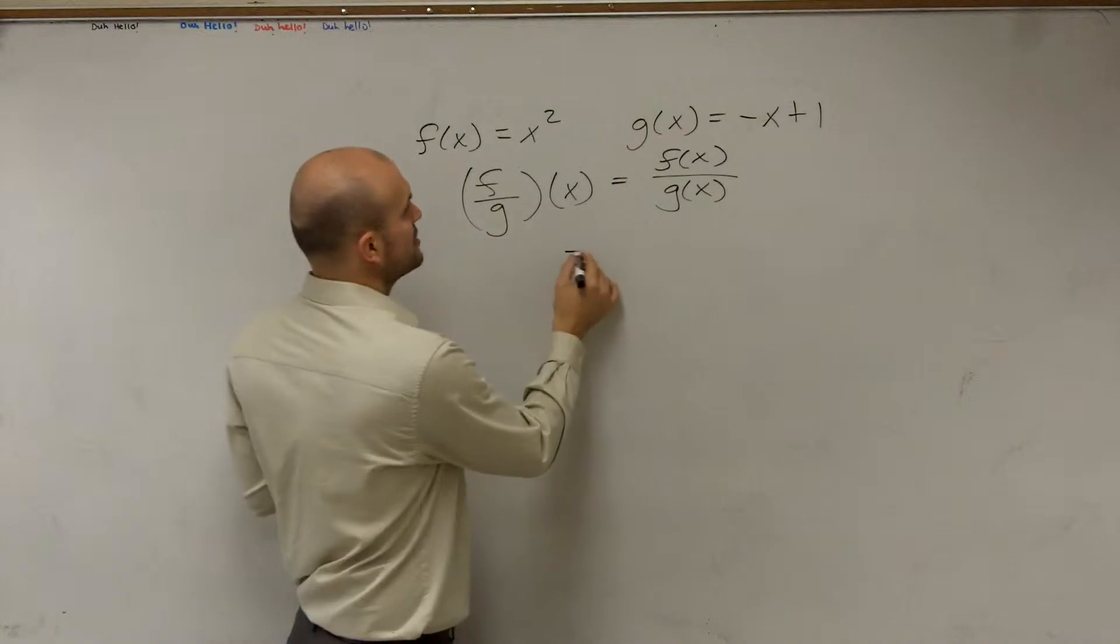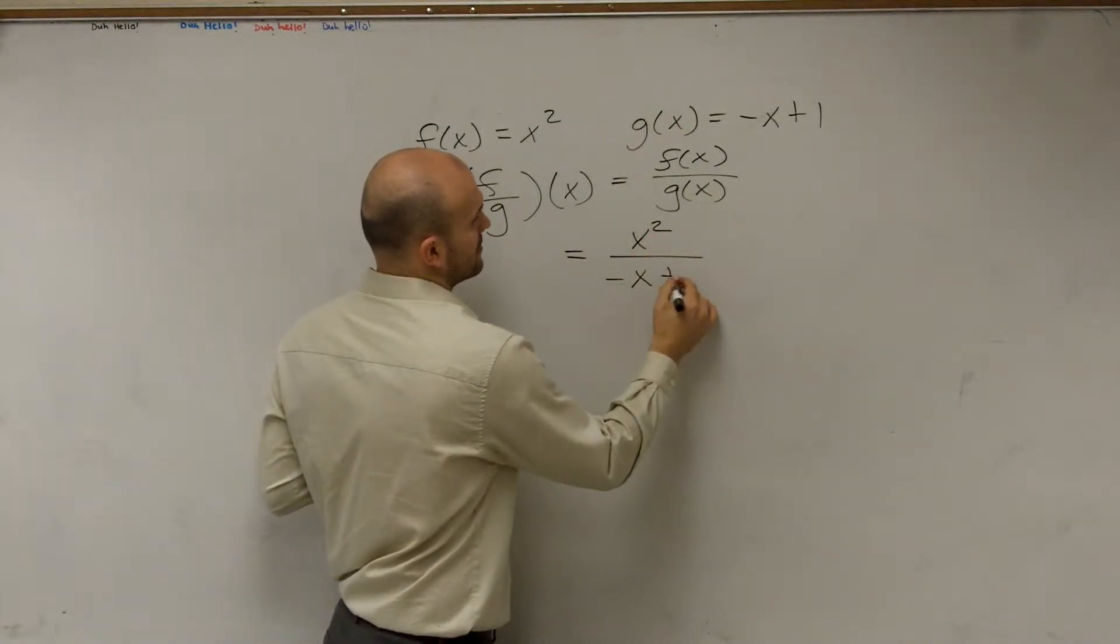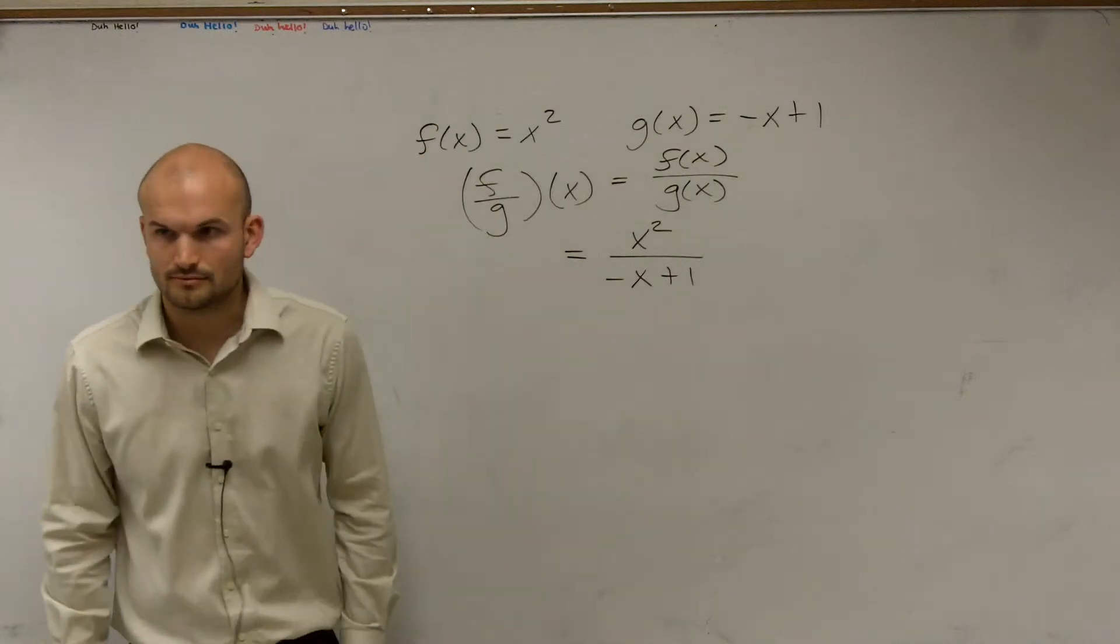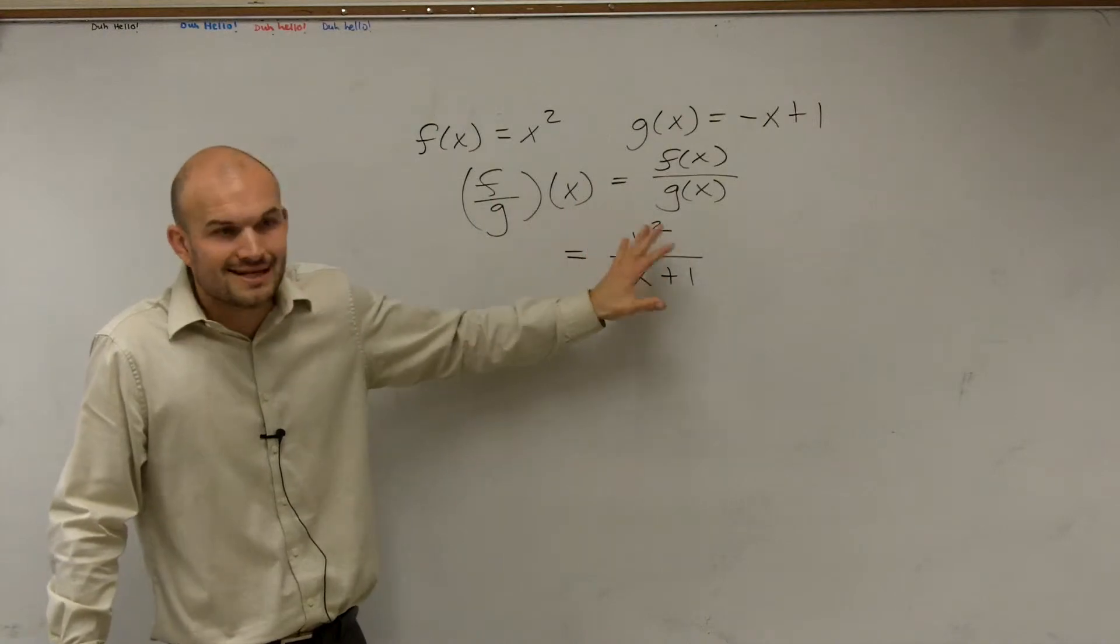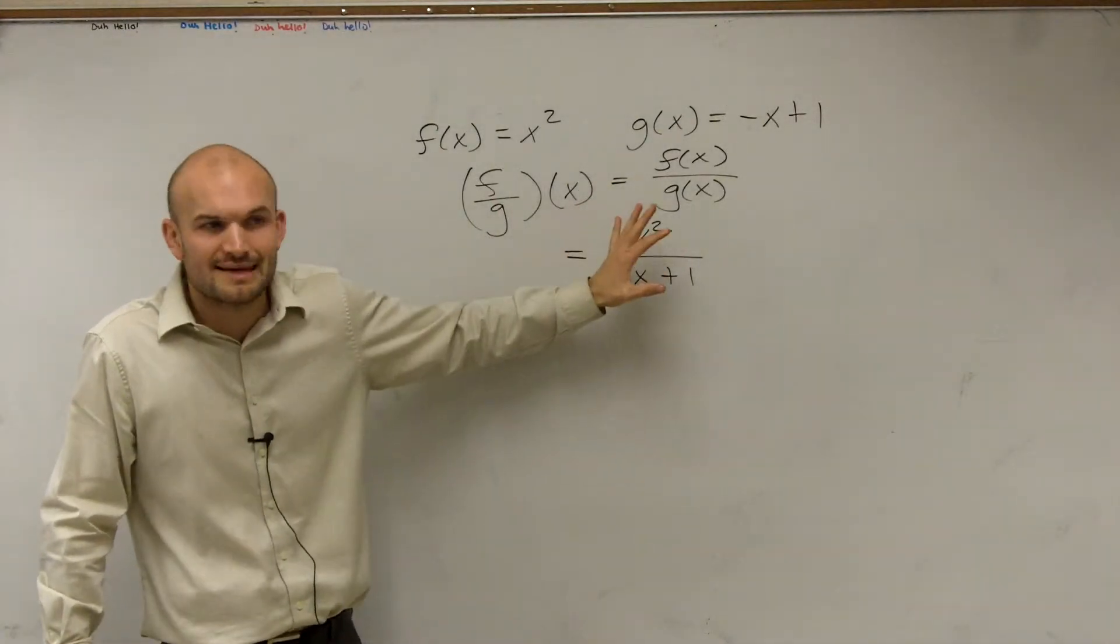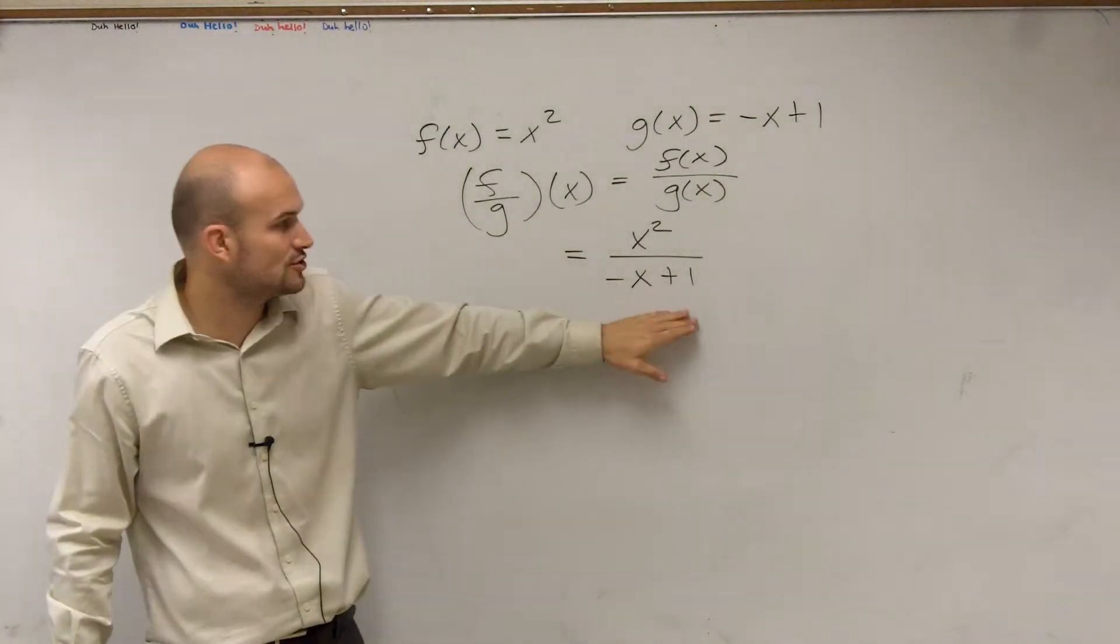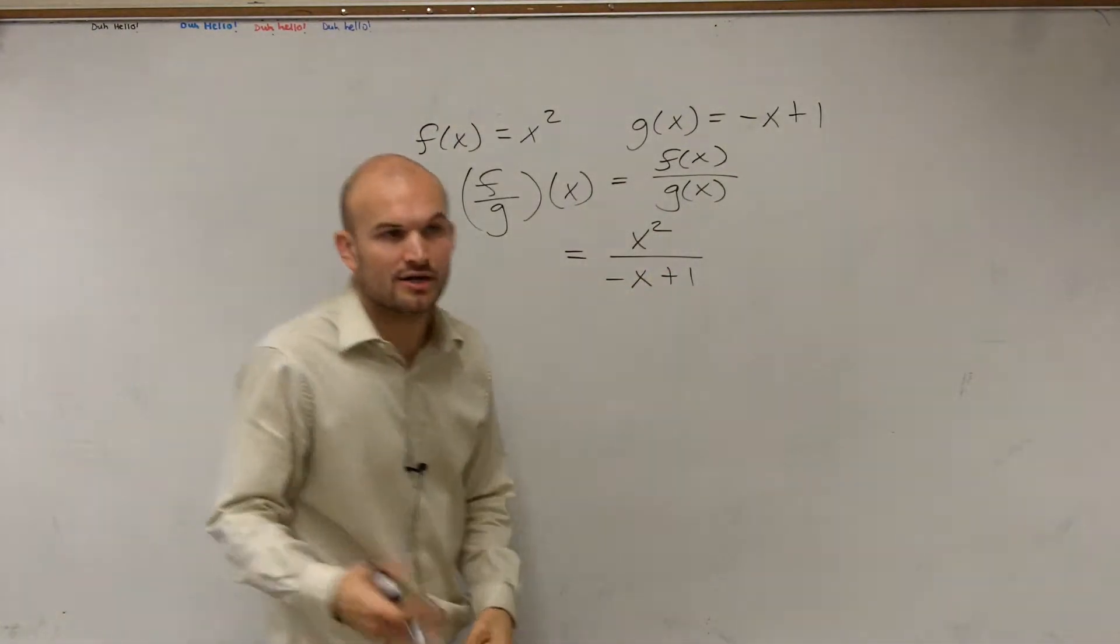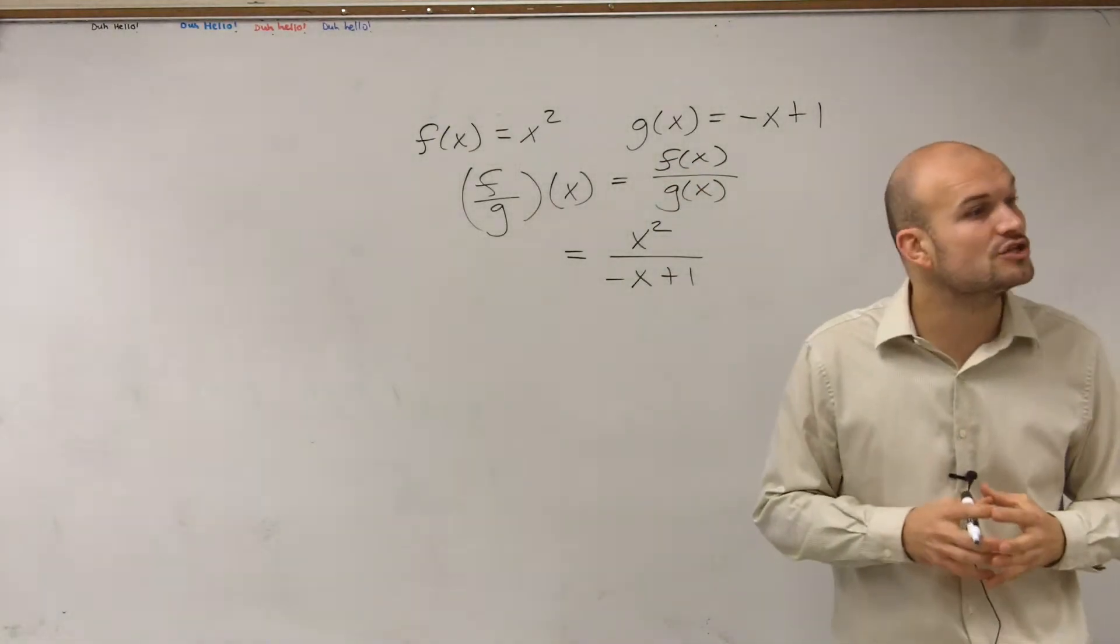So we take our f of x function, which is going to be x squared divided by negative x plus 1. Now we look at this and we say, can we simplify this really at all? And you cannot separate this and try canceling out or doing any dividing out. This is a whole term by itself. This whole term divides into x squared. So there's no real simplifying we can have, but what we do need to do is create a constraint.